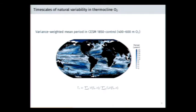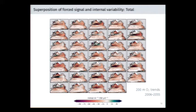I want to go back to the internal variability component and illustrate a few results. In the context of a large ensemble, we have multiple realizations of the next several decades. We can look at the diversity of those realizations to try to understand the role of natural variability in driving signals of change.